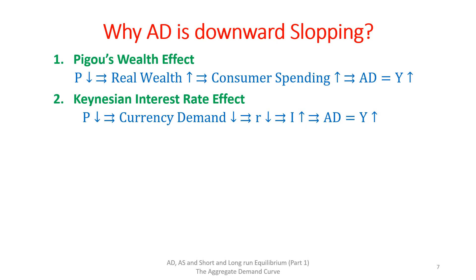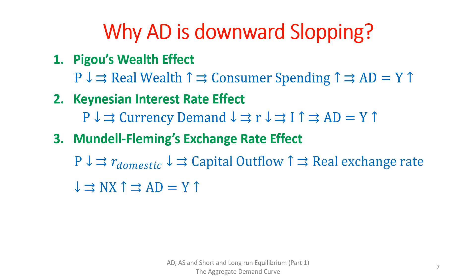Third explanation for the downward slope of the aggregate demand curve is the Mundell-Fleming exchange rate effect. According to this, a decrease in prices in a country results in decreasing the interest rate in that country. Responding to a decrease in their reward, capital owners pull their capital from that country and take it abroad where the interest rate is high. Because of this capital outflow, the real exchange rate decreases and therefore net exports increase, which translates into increasing aggregate demand or output level.